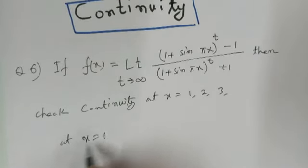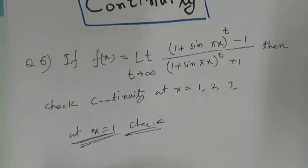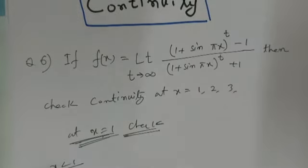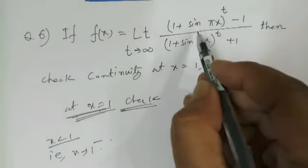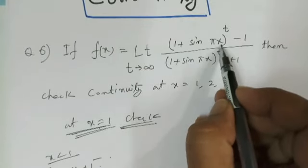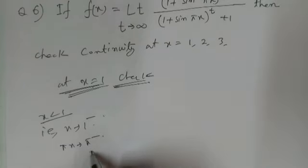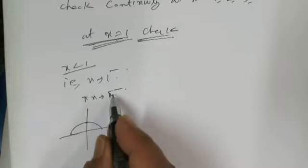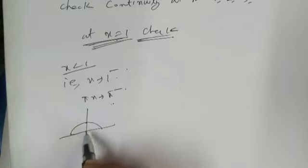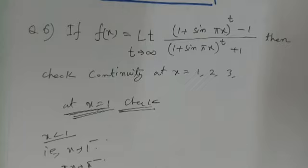Check at x equals to 1. For checking the left-hand limit at x equals to 1, let x less than 1, that is x tends to 1 minus. So here in this question we have sin(πx), so πx tends to π minus. When πx tends to π minus, this will be in the second quadrant — because this is π/2 and this is π, so for π minus this angle is in the second quadrant. So sin(πx) is obviously positive because sine is positive in the second quadrant.